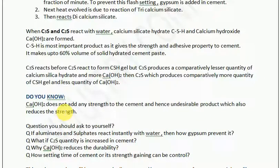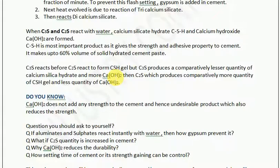In tricalcium silicate, a lesser quantity of CSH gel is formed and more quantity of calcium hydroxide — Ca(OH)₂ — which is an undesirable product that reduces strength. So we can make this conclusion: cement having more dicalcium silicate will be stronger; cement having more tricalcium silicate will be less strong.